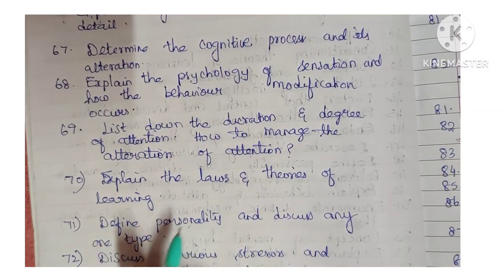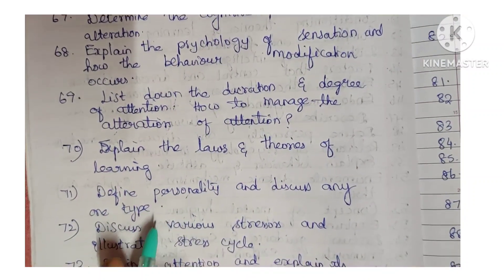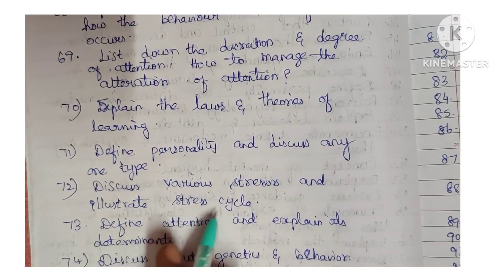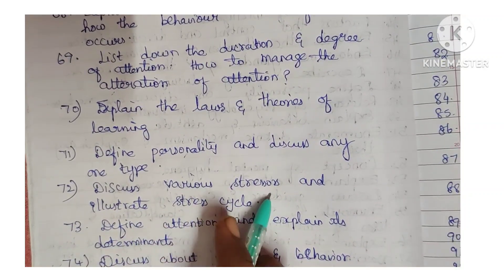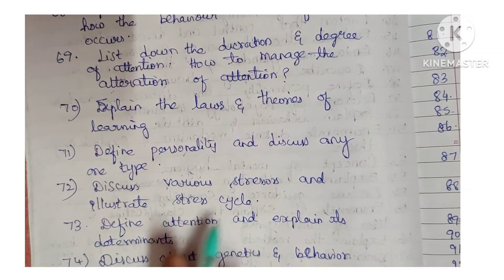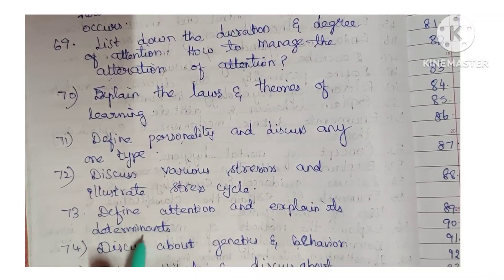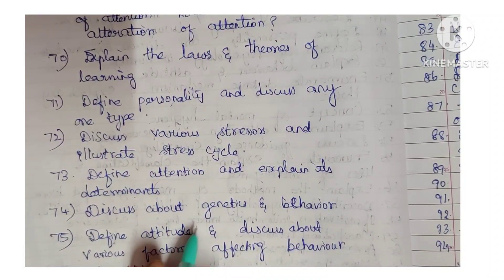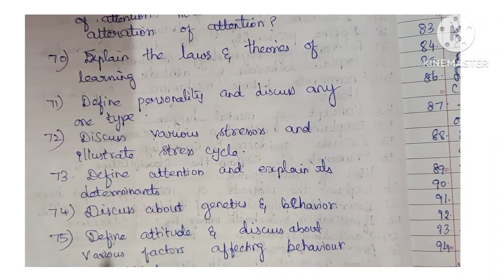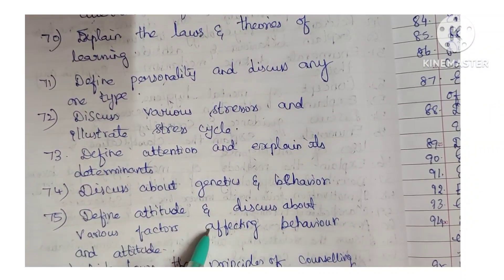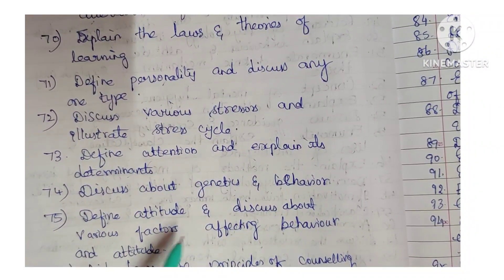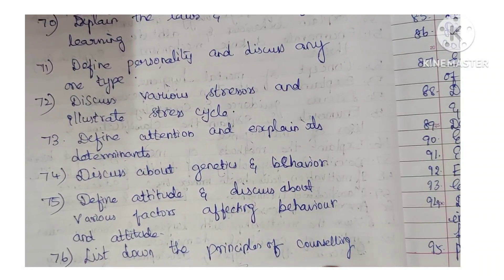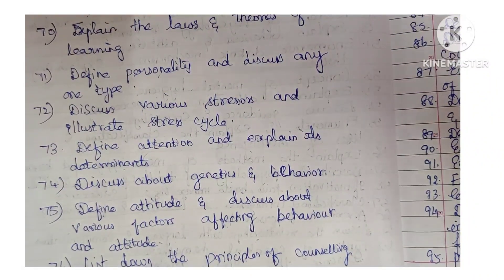Next: explain the laws and theories of learning. Next: define personality and discuss any one type. Next: discuss various stressors and illustrate the stress cycle. Next: define attention and explain its determinants. Next: discuss about genetics and behavior. Next: define attitude and discuss various factors affecting behavior and attitude. Next: list down the principles of counseling.